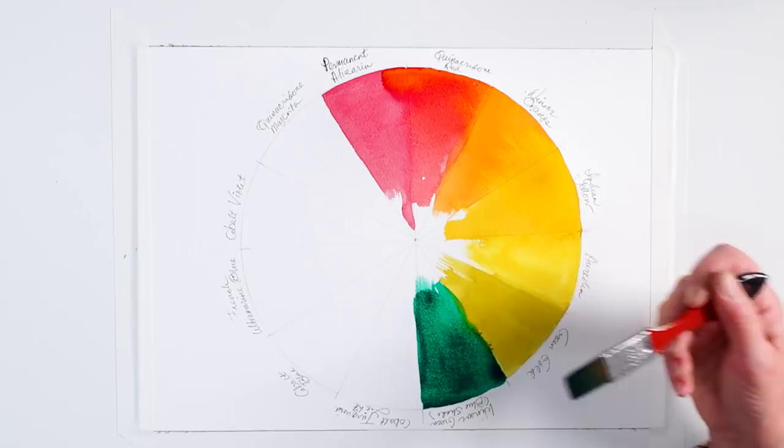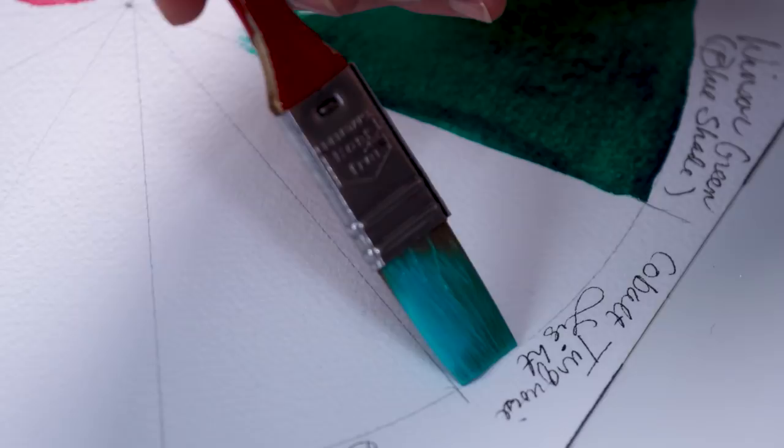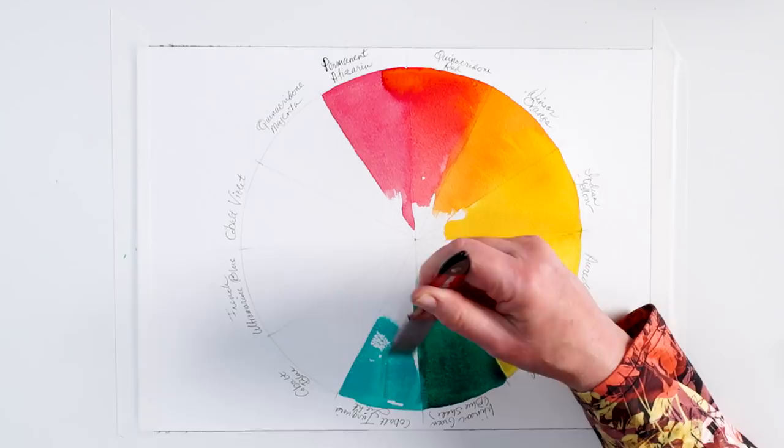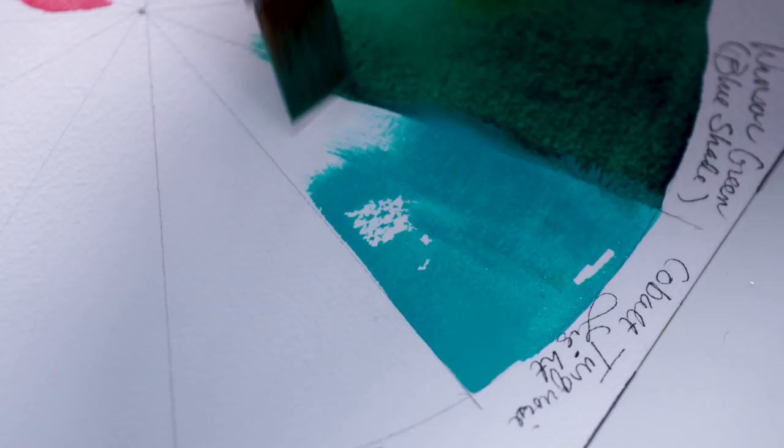Moving on, this next color is a favorite of mine. This is pretty opaque—it's called cobalt turquoise light. It's fairly opaque but it's just a gorgeous color, and I love to use it for highlights. Actually, because it's opaque, you can use it on top of your paint sometimes and get a great highlight.